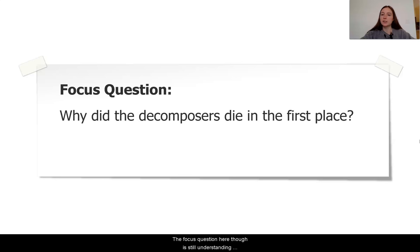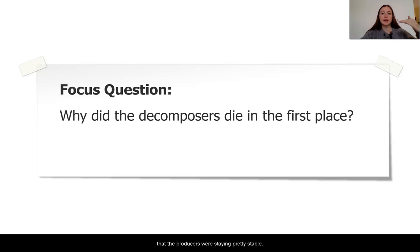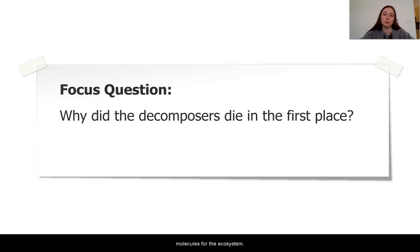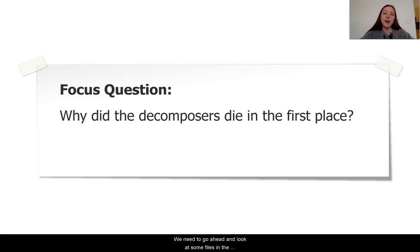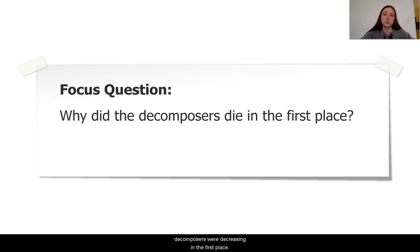Our focus question here is still understanding why did the decomposers die in the first place? It seems like, if we go back to our graphs, the producers were staying pretty stable, meaning that they were producing energy storage molecules for the ecosystem. So why did these decomposers die out? We need to go ahead and look at some files in the biodome to try and understand why these decomposers were decreasing in the first place.